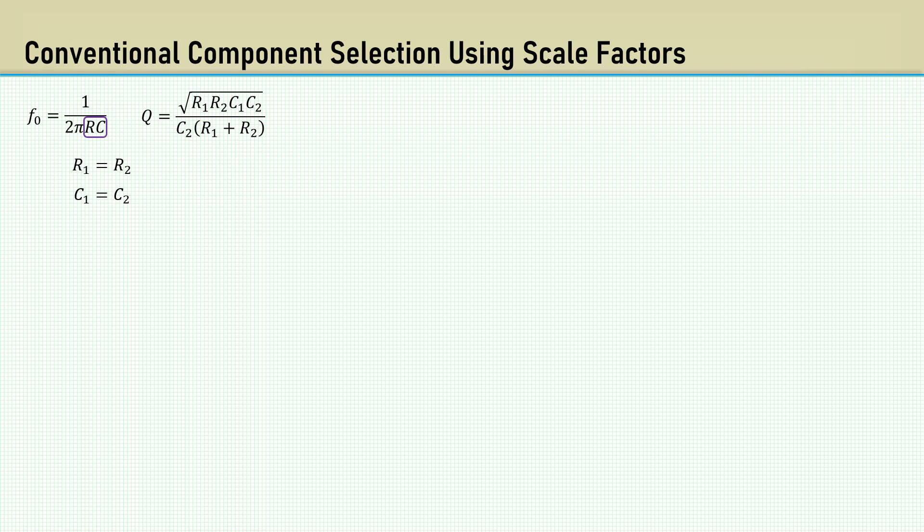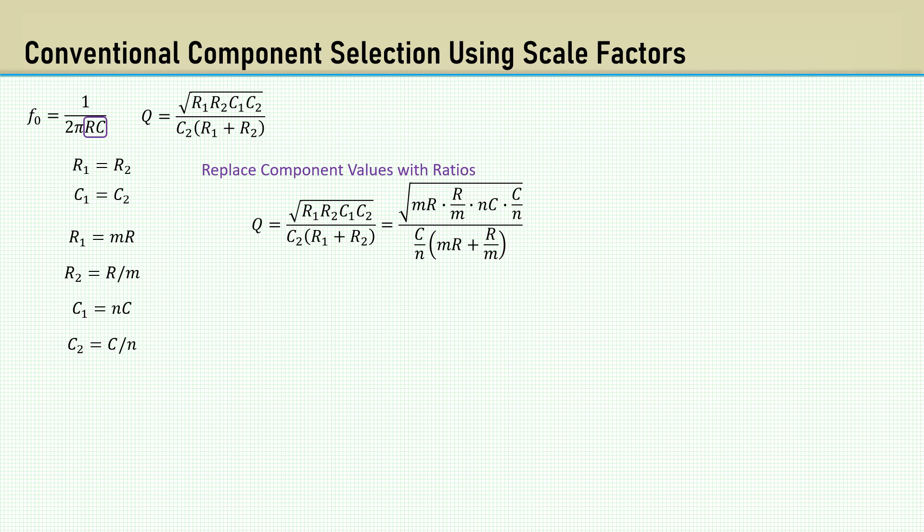A conventional approach is to use scaling factors on the resistor and capacitor values, where R1 is M multiplied by R, and R2 is R divided by M, C1 is N multiplied by C, and C2 is C divided by N. In the equation for Q, we can replace the values for R1, R2, C1, and C2 with their associated scaling factors.